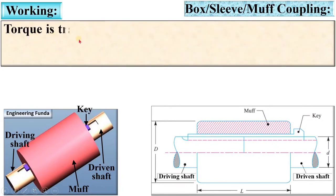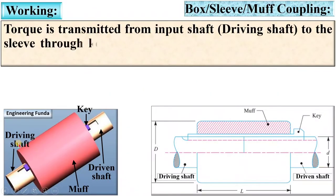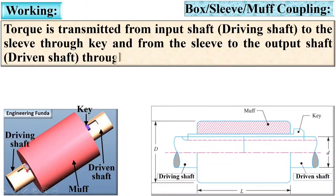Now working: torque is transmitted from input shaft, you can say it is the Driving Shaft, to the Sleeve first through the key, and from the Sleeve to the Output Shaft or Driven Shaft through the key again. Very simple: power is transmitted first from the Driving Shaft to the Sleeve through the key, and then once again from the Sleeve to the Driven Shaft through the key.